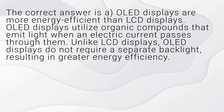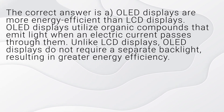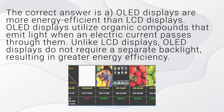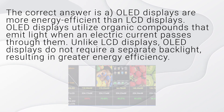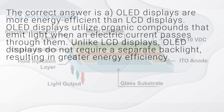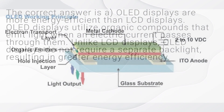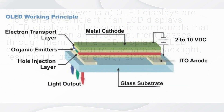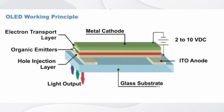The correct answer is A: OLED displays are more energy efficient than LCD displays. OLED displays utilize organic compounds that emit light when an electric current passes through them. Unlike LCD displays, OLED displays do not require a separate backlight, resulting in greater energy efficiency.